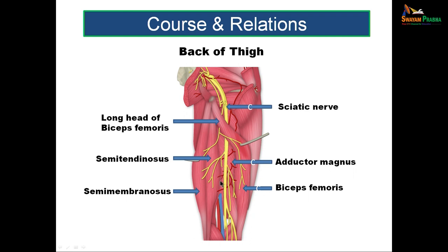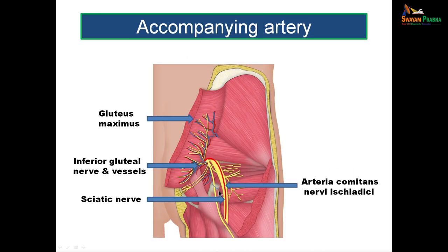The sciatic nerve descends in the middle of the thigh to reach the popliteal fossa. In the gluteal region and the upper part of the thigh, it is accompanied by an artery called the arteria comitans nervae ischiadici, a branch of the inferior gluteal artery. This is the accompanying artery of the sciatic nerve and is a remnant of the axis artery of the lower limb. If it is enlarged, a narrow femoral artery should be ruled out. Otherwise, it ends by supplying the sciatic nerve and can also take part in anastomosis.